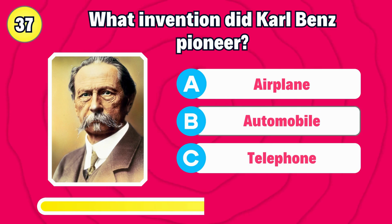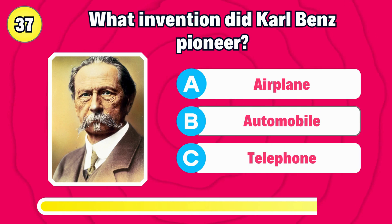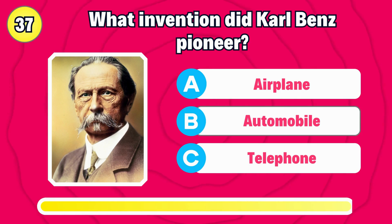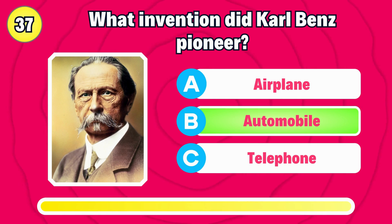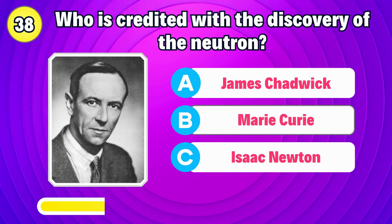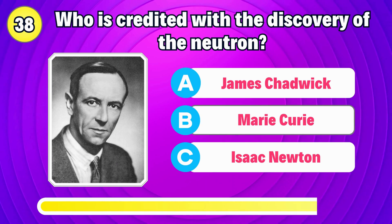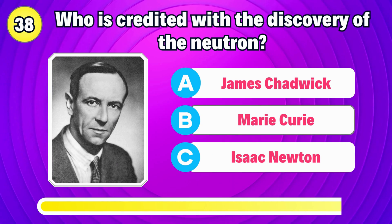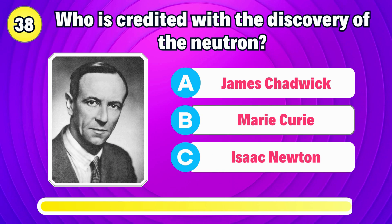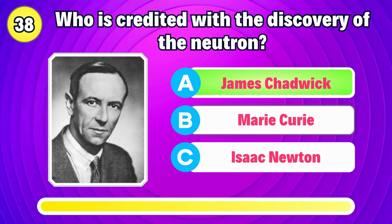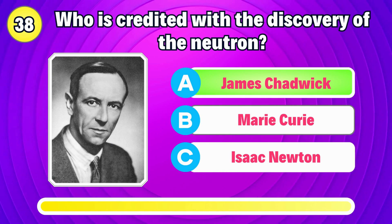What invention did Carl Benz pioneer? Right, it's the automobile. Who is credited with the discovery of the neutron? Correct, it's James Chadwick.